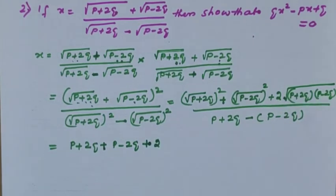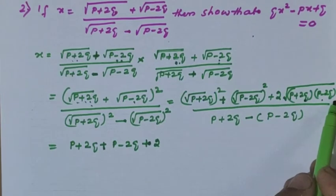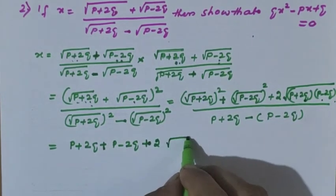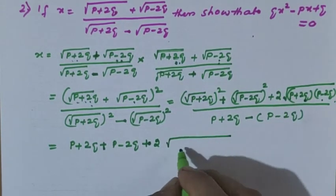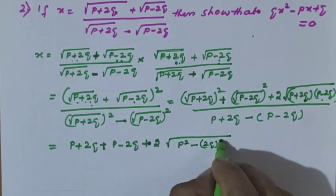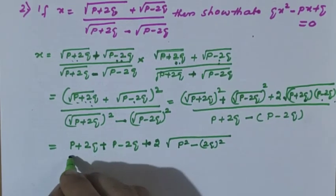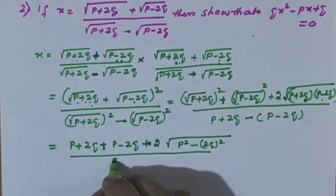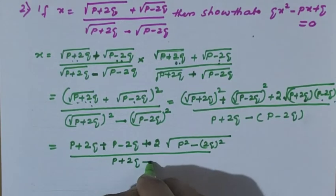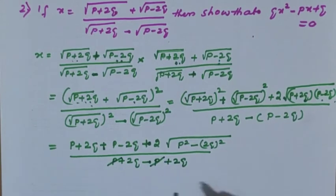In the bracket you can see it is a plus b and a minus b, so under the root it is root of p squared minus 2q whole squared, which uses the formula a squared minus b squared. The denominator: p plus 2q minus expansion minus p plus 2q. So plus p and minus p cancel, 2q plus 2q gives 4q.